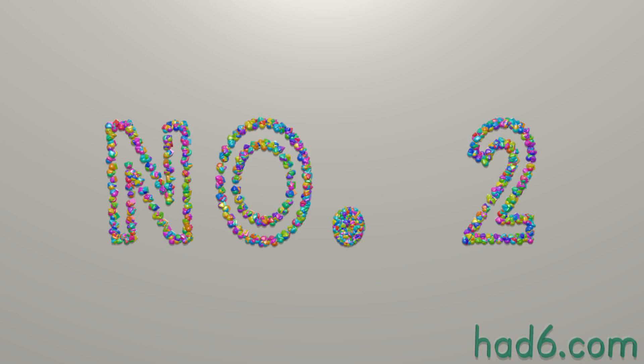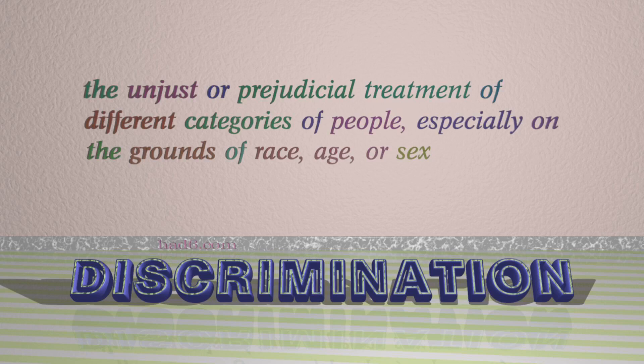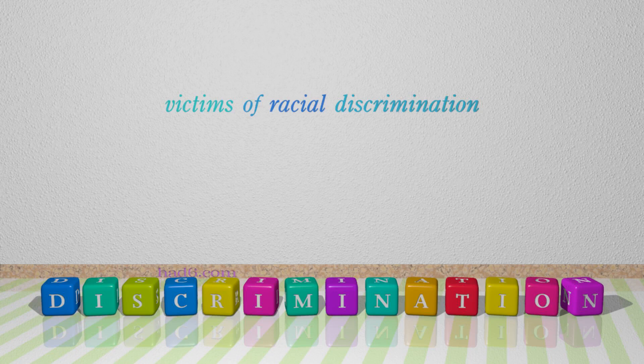Number 2: Discrimination. Which means: The unjust or prejudicial treatment of different categories of people, especially on the grounds of race, age, or sex. For example: Victims of racial discrimination.